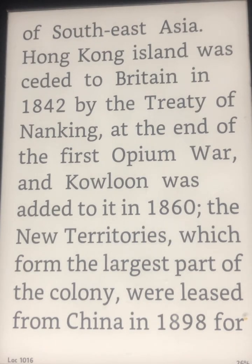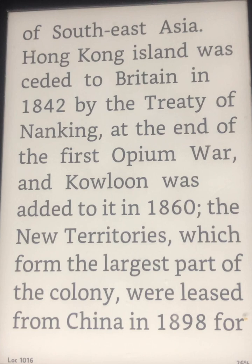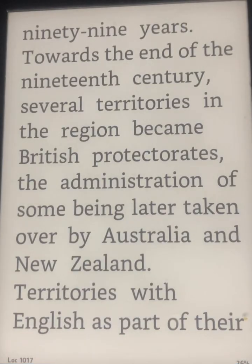Hong Kong Island was ceded to Britain in 1842 by the Treaty of Nanking, at the end of the First Opium War, and Kowloon was added to it in 1860. The New Territories, which formed the largest part of the colony, were leased from China in 1898 for 99 years.